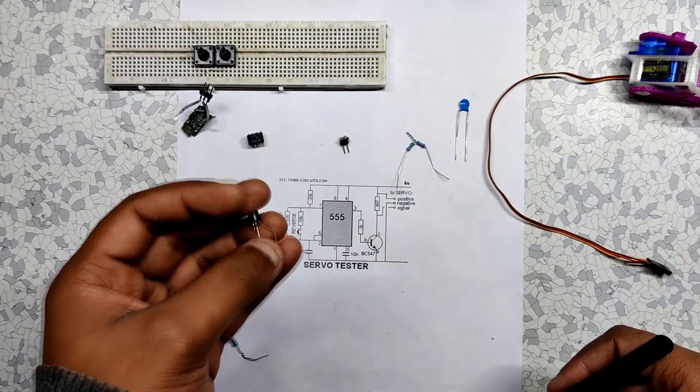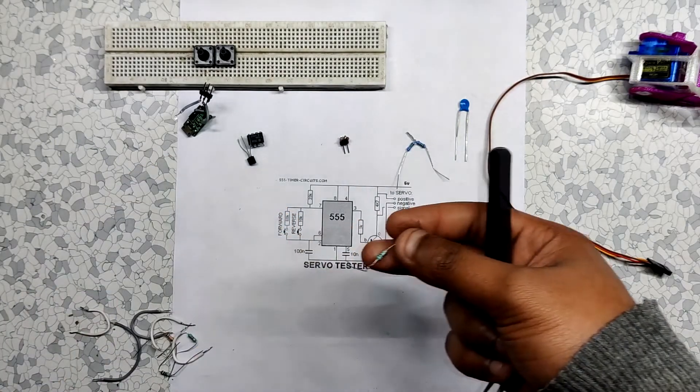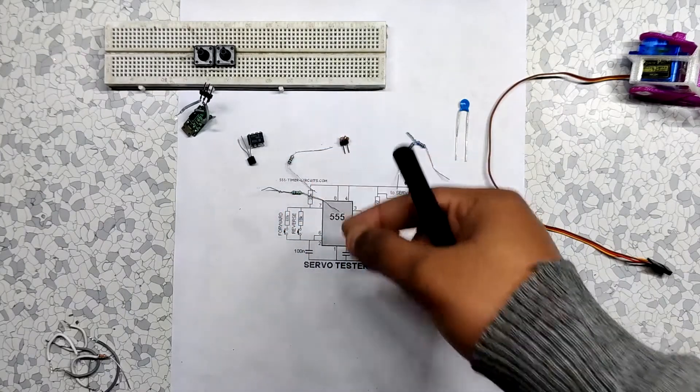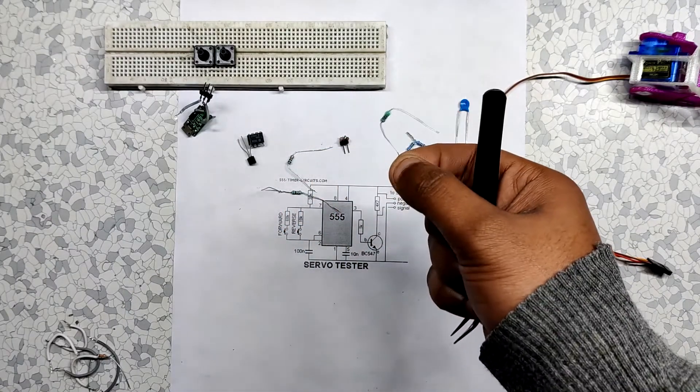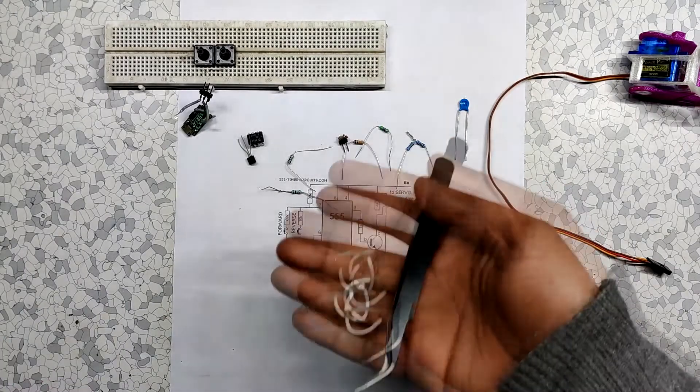A BC547 transistor, 100 ohm resistance, 1 kilo ohm resistance, 4.7 kilo ohm resistor, 6.8 kilo ohm resistance, and a few jumper wires.